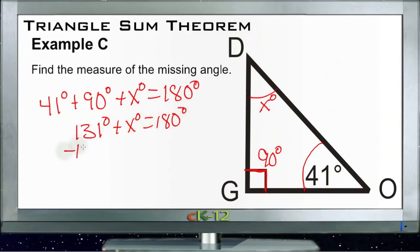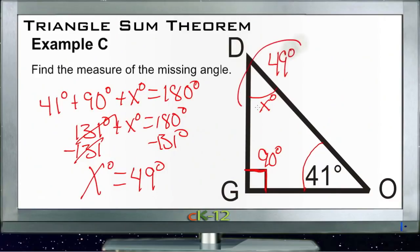And then we subtract 131 degrees from both sides, and we get x degrees equals 49 degrees. So that tells us that this angle up here must be 49 degrees. That's all there is to it.